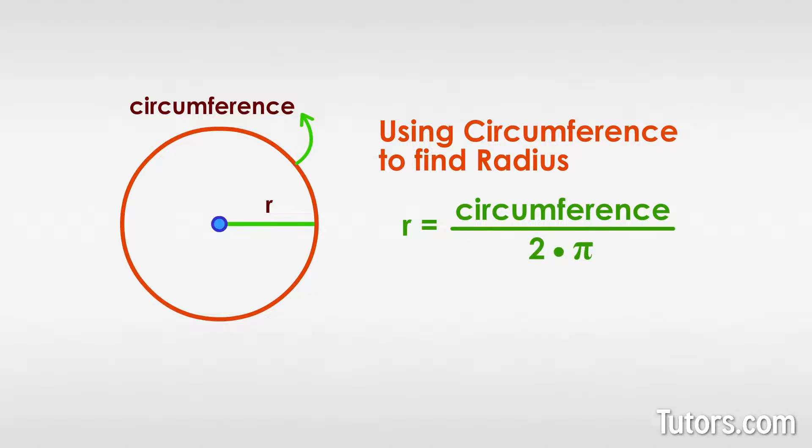You can also calculate the circumference from a given radius with this formula. Circumference equals 2 pi times the radius.